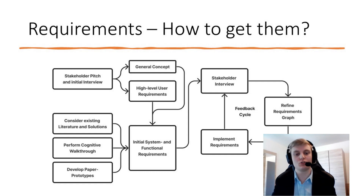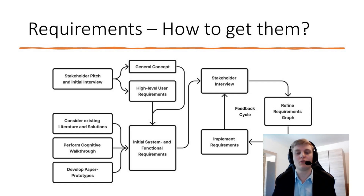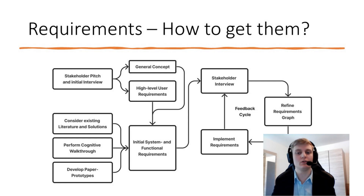Additionally, we perform a cognitive walkthrough of what our solution could look like and develop paper prototypes to be a little more precise. This gives us a set of initial system and functional requirements, which are presented to the stakeholders again in a semi-structured interview — meaning we prepare some questions beforehand, though mostly the stakeholders listen and give feedback on what they think is critical, as they are the experts. This leads to refining our requirements and then trying to implement them, and we again go into a stakeholder interview, forming a feedback cycle averaging around 3-4 weeks per cycle.